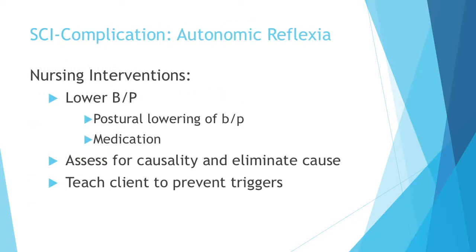Outside of removing the stimulus, you're also going to want to lower that blood pressure quickly. Put them in a seated position to use posture for lowering BP, then give medication — usually hydralazine, a ganglion blocking agent, to lower the extreme high blood pressure. Assess for increased intracranial pressure. Look for what caused it and eliminate the cause: if they have a distended bladder, they might need a catheter; check the rectum for a fecal mass; look at the skin for any stimuli.